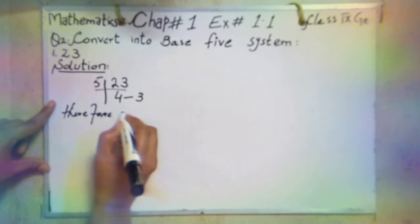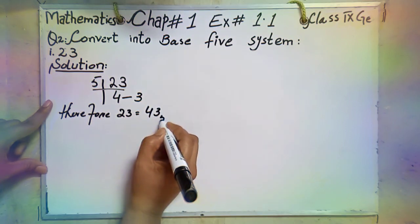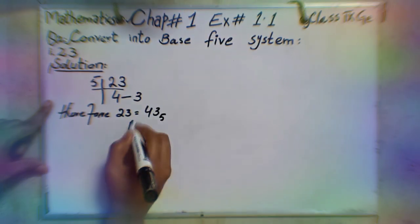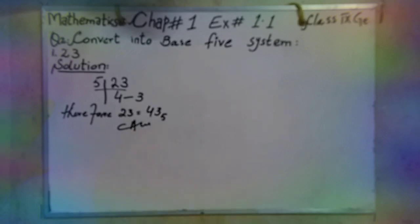Therefore, 23 is equal to 43 base 5. First part finished.